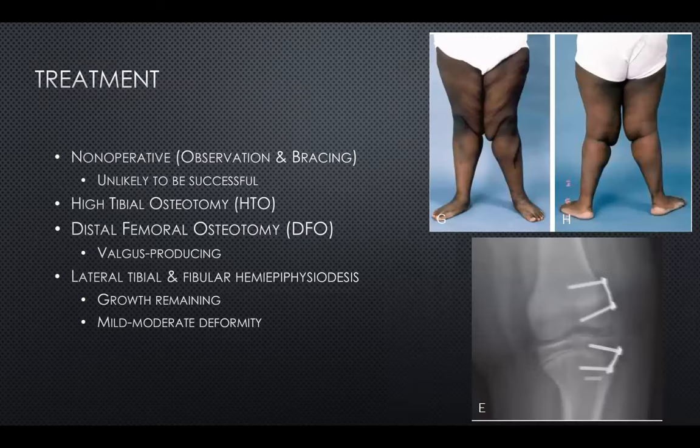Non-operative treatment is almost never done for adolescent Blount disease because outcomes are poor. You risk progression of the deformity, further damage to the medial knee joint, altered kinematics, and increased risk of degenerative arthritis. Surgery is the mainstay approach.